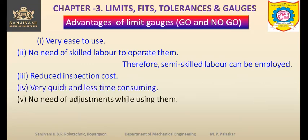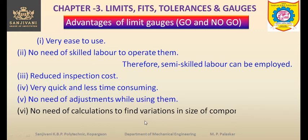There is no need for adjustments while using limit gauges — in fact, adjustments are not possible, so we directly use them. Also, there is no need for calculations to find variations in the size of the component produced. We are not interested in finding the actual size; we are just checking whether the size is within the limits or not.